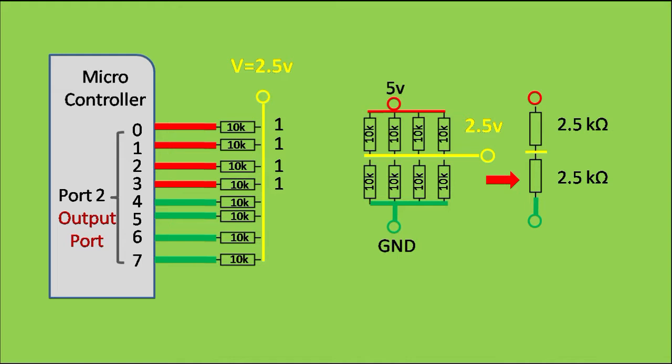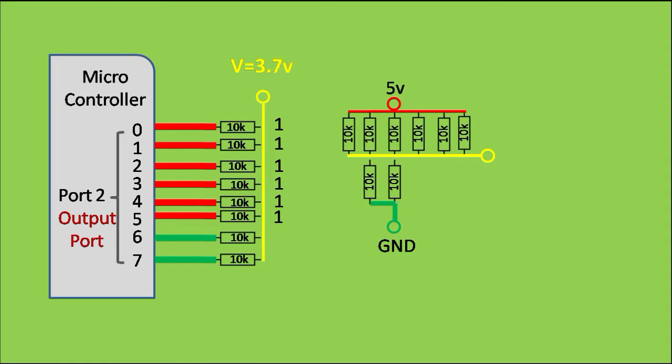Similarly, writing 1 to the fifth pin will give 3.5V, with 6 pin will get 3.7V, with 7 pin will get 4.3V, and finally writing 1 to all 8 bits will give 5V.